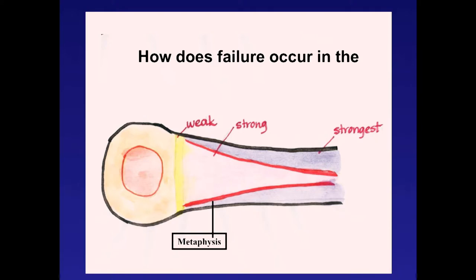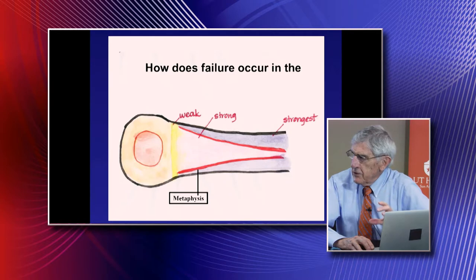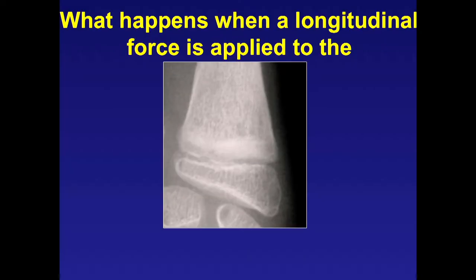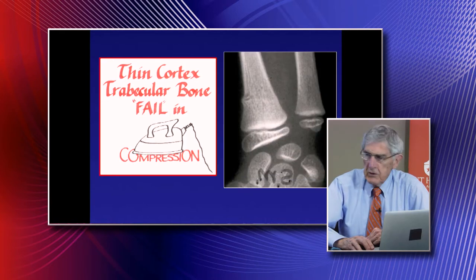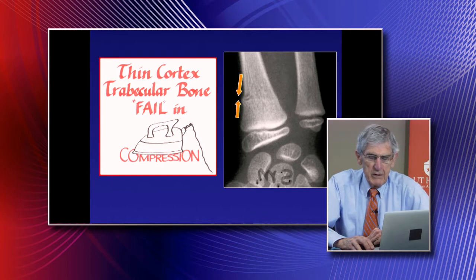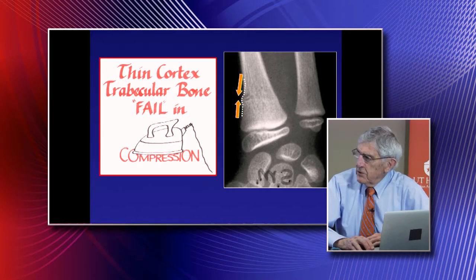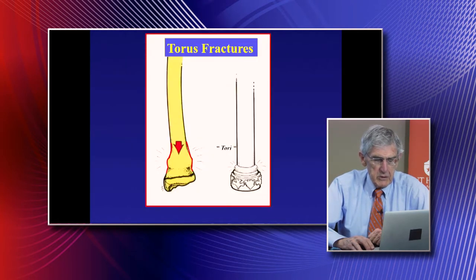Now talking about the metaphysis—that's where we're remodeling from quantity bone to quality bone. When you apply a longitudinal force to this weak bone with its thin cortex, it fails in compression. You get a torus fracture—an incomplete fracture. A lot of these are passed off as simple strains because the cortex is intact and there's no bleeding into the tissues. The torus fracture is named because it looks like the base of a Greek column.